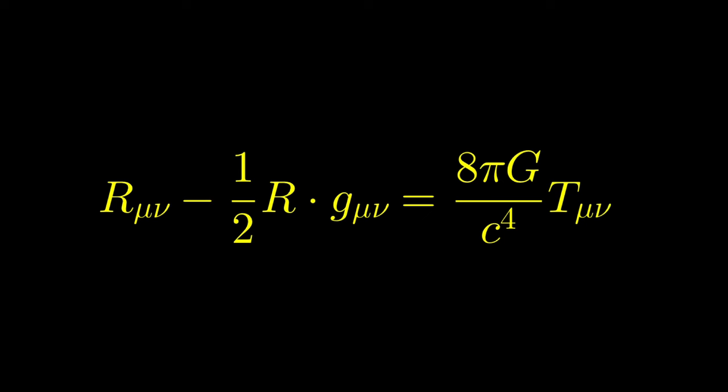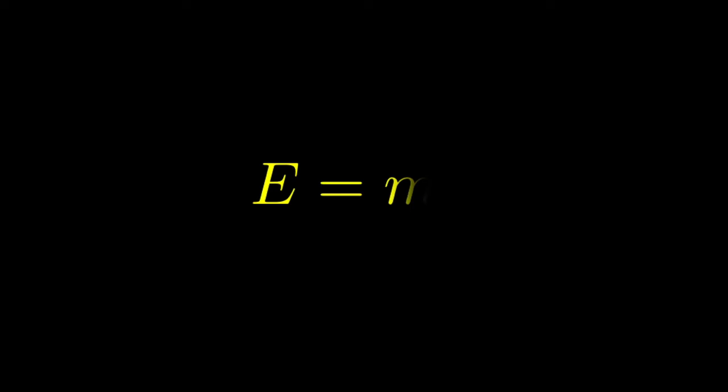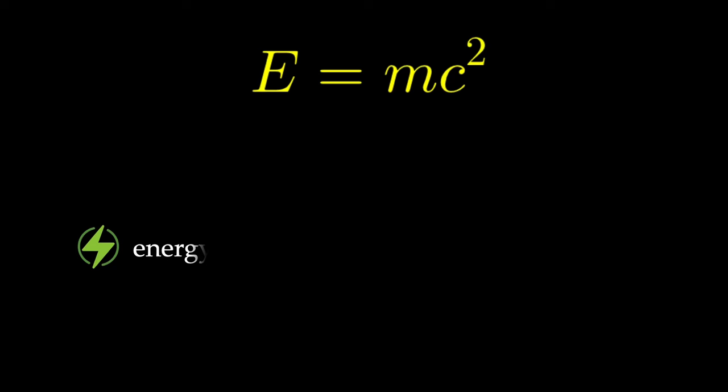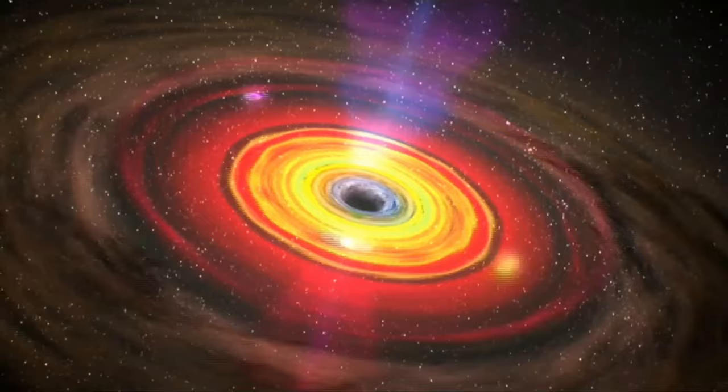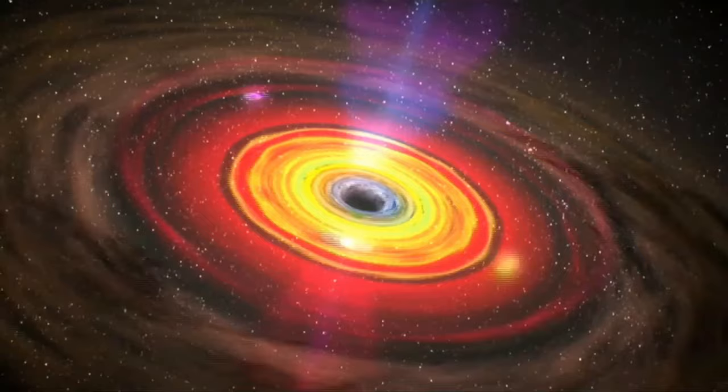As Einstein found out, energy equals mass — E equals mc squared — and energy curves spacetime. Therefore, mass curves spacetime. Not only heavy masses like planets, stars, and black holes curve spacetime; every type of energy curves spacetime. Even a beam of light coming out of your phone curves spacetime. How much a certain distribution of energy curves spacetime is described by the Einstein field equation.